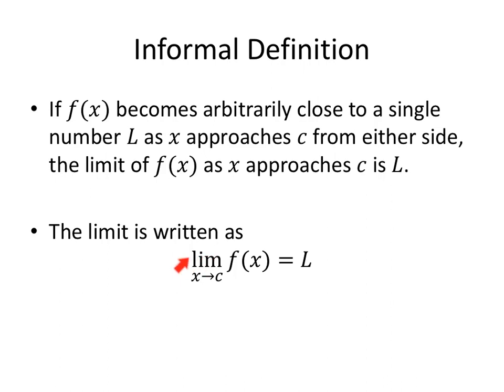So all three parts of this are very necessary. The limit tells us what we're doing, the x approaches c tells us where we're looking, the f(x) tells us which function we're looking at, and then the limit over here is the y values that this function is approaching as the x values are getting closer to c.